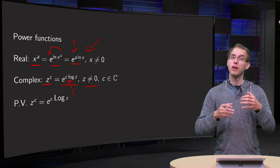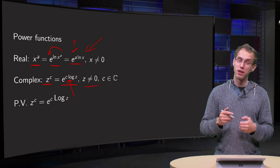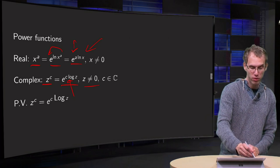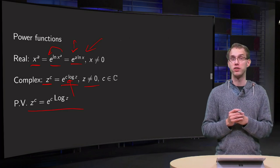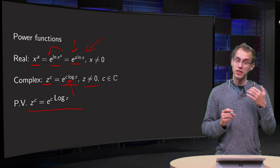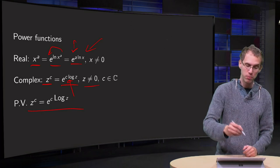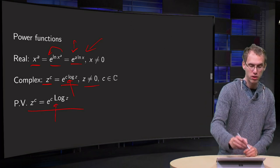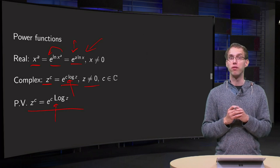Now we can make this function single-valued in a familiar way. That's called the principal value of your power function z to the power c, and it equals e to the power c times Log of z — but now with the capital L, so we take the principal value of the log.